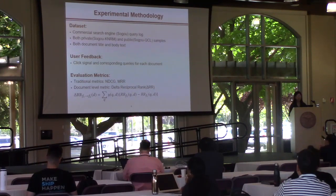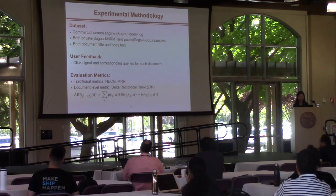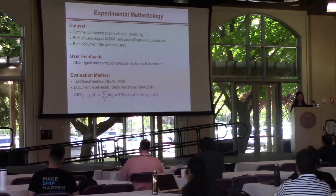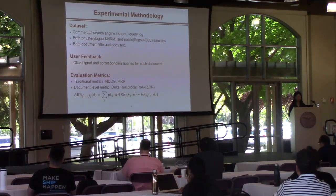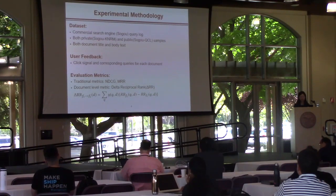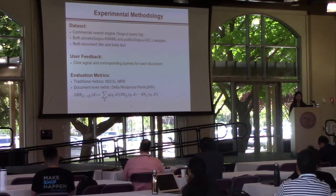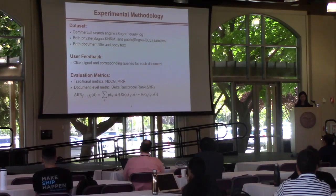We use two datasets from the same commercial search engine to verify our ideas. Both datasets are from the Sogou query log, using private and public versions. We use both document title and body text as the original document representation, and use click signals as user feedback. We evaluate our model with traditional metrics in information retrieval such as NDCG and MRR, and also design a document-level metric, DeltaRR, where better-performing models have positive DeltaRR.